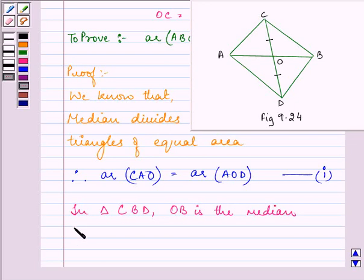So, therefore, area of COB is equal to area of BOD. Let this be the second equation.